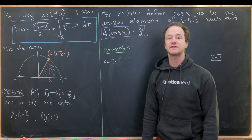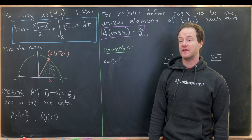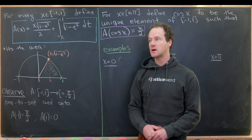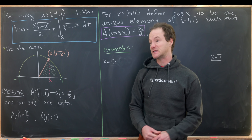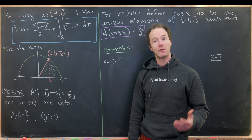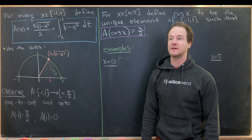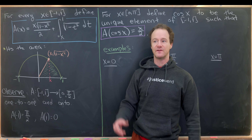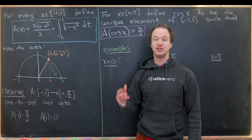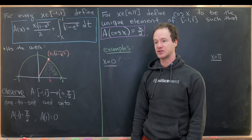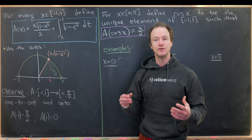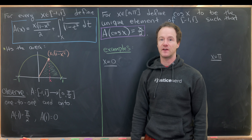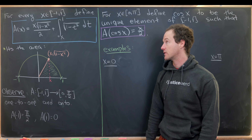Here we're going to look at an interesting way to define the cosine function. This comes from Spivak's calculus book. What's interesting about it is that it doesn't use the standard definition of cosine of theta equals adjacent over hypotenuse. Instead, it uses a definition via integrals and the fundamental theorem of calculus.